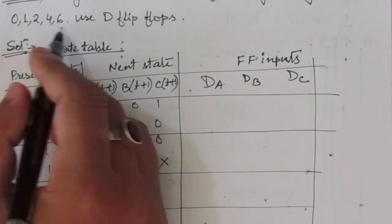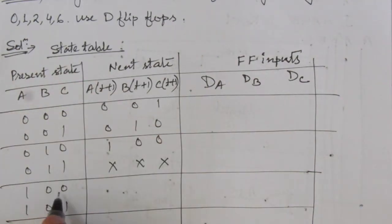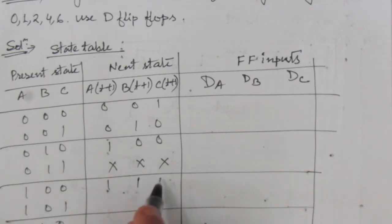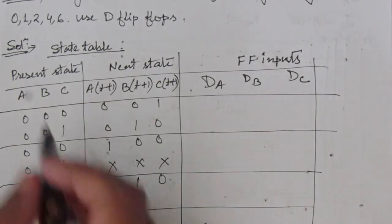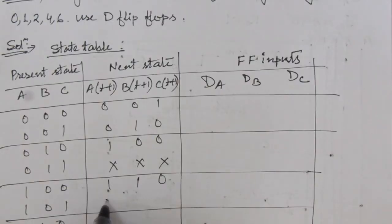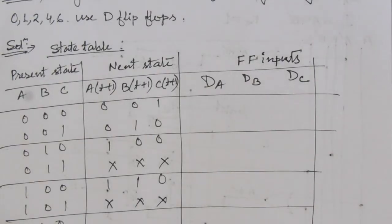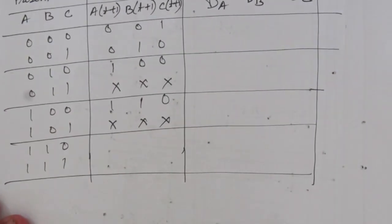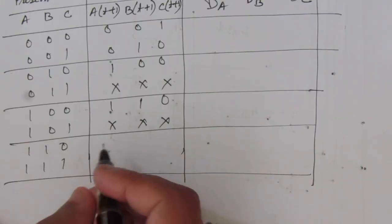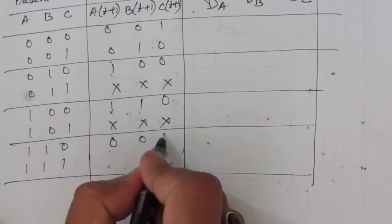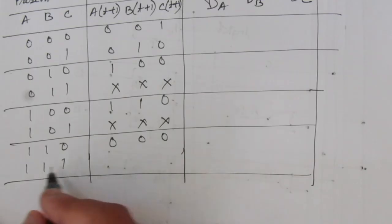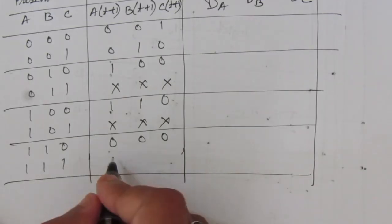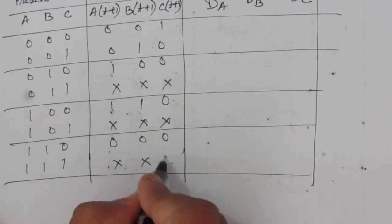Since 3 is not given in this sequence, it is don't care. Then we have 4 — when we have 4, it will go to 6, so next state is 1,1,0. Next we have 5, which is also not in this sequence, so here we will have don't care values. Then we have 6 — when we have 6, it will go to 0, so next state is 0,0,0. For 7, we do not have this as a used state, so we will have don't care, don't care, don't care.